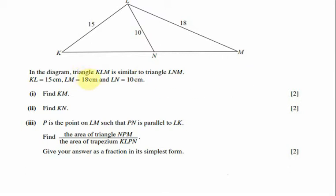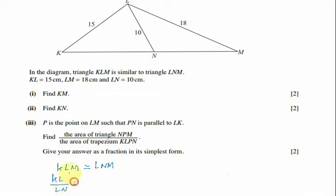In this question, in the diagram, triangle KLM is similar to triangle LNM. To find KM, I set up the proportion: KL upon LN equals LM upon NM equals KM upon LM.